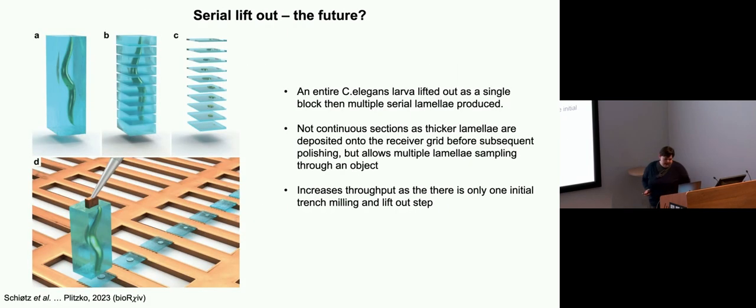Then maybe going even further forward, look at this paper that was published, it came out in BioRxiv earlier this year, again from Jürgen Plitzko, taking lift-out and doing serial lift-out. In this case, it's a whole C. elegans larvae, is lifted out in a single block and then taken to the receiver grid and attached and milled. Each of these slices is like several microns and is then polished. So it's not truly serial continuous, but it's regular sampling of a large block.